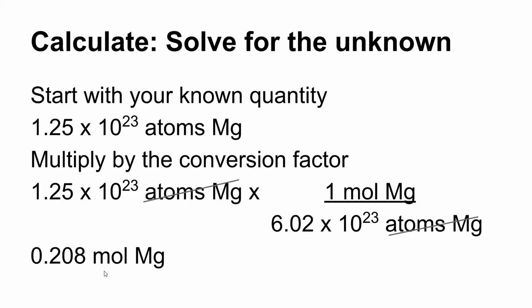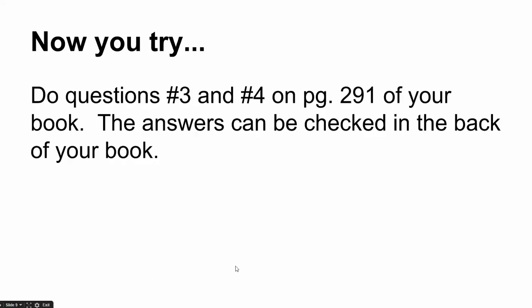So the last thing you need to do is you just need to look at your answer and say, does this make sense? In this case, I would expect that I would be looking at a smaller number of moles because I know that one mole is 6.02 times 10 to the 23rd. Well, I don't have 6.02 times 10 to the 23rd. I only have 1.25, so I know that it's going to be a fraction of a mole. It's going to be less than one mole. This is less than one mole, and so that is my answer. Notice the unit that did not cancel is the unit that goes behind the number. That's what I'm left with.